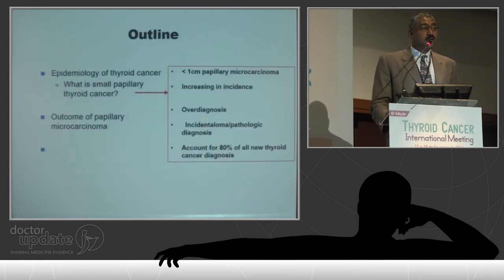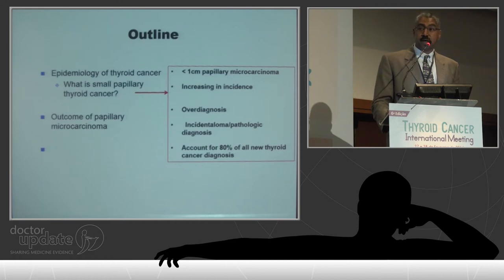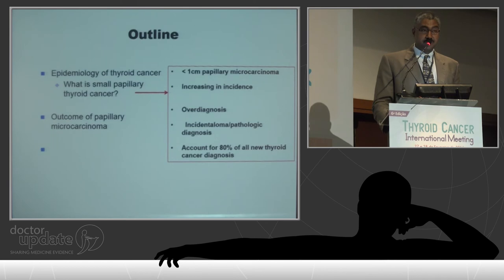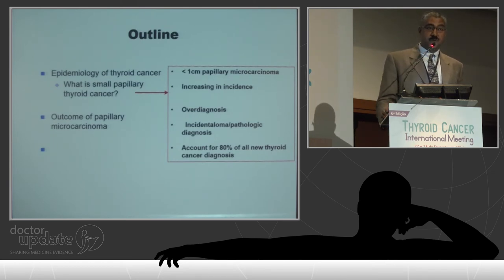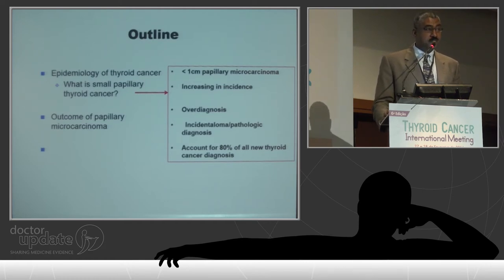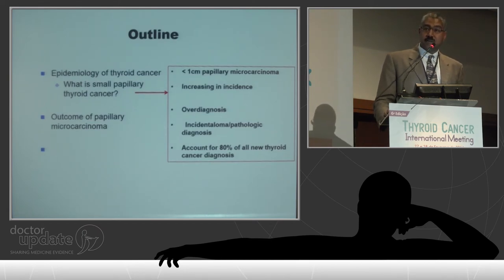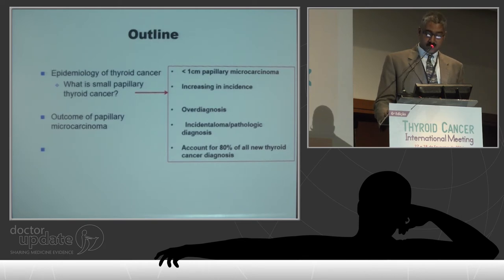To summarize the epidemiology of thyroid cancer, specifically relevant to papillary microcarcinoma: the definition is less than one centimeter. Clearly the incidence has increased, and some of it is due to overdiagnosis, so we really do need to think about active surveillance in these patients. It's important to distinguish what is diagnosed incidentally versus pathologically — I'll share outcome data on that in the next section.